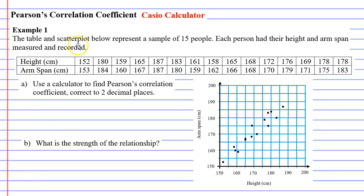It says the table and scatterplot below represent a sample of 15 people. Each person had their height and arm span measured and recorded, and we can see a record of these in our table here.